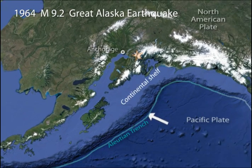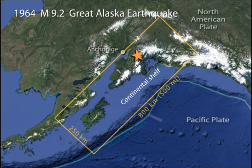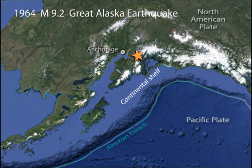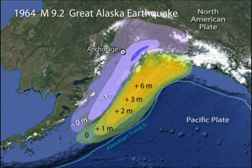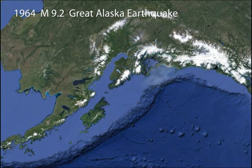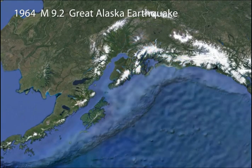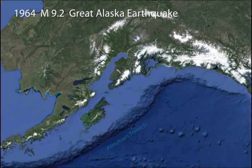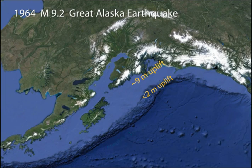The 1964 magnitude 9.2 Great Alaska earthquake ruptured a major segment of the eastern Aleutian subduction zone, 800 kilometers long, lasting over 4 minutes. The continental shelf and slope of the overriding North American plate was uplifted over 9 meters, while inboard areas subsided as much as 2 meters. This sudden displacement of the ocean floor generated the tsunami that claimed lives from Alaska to Northern California. Less than 2 meters of regional uplift occurred at the trench.